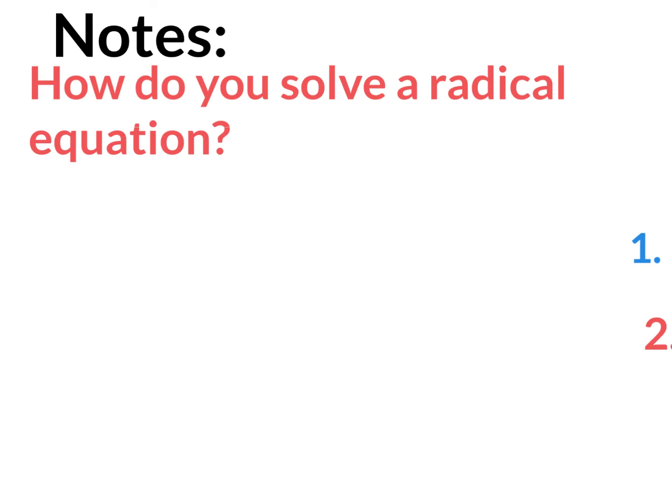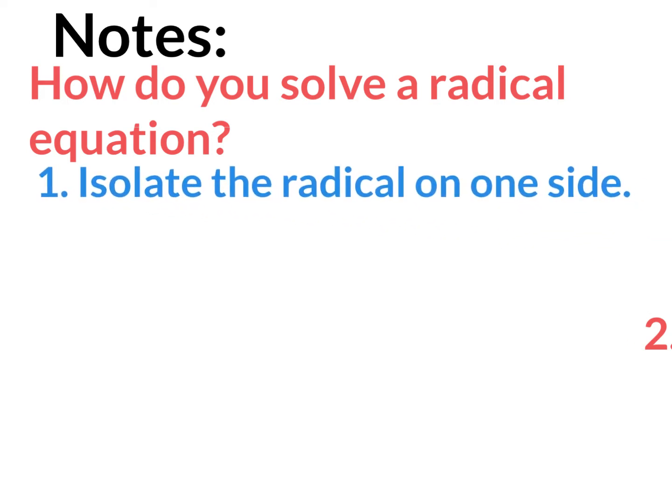Let's begin these notes by answering the question: how do you solve a radical equation? We should already know how to do this. Step 1 is to isolate the radical on one side of the equal sign. That means if you have other items, you want to get it all by itself on one side.